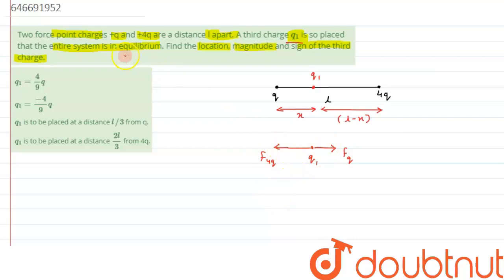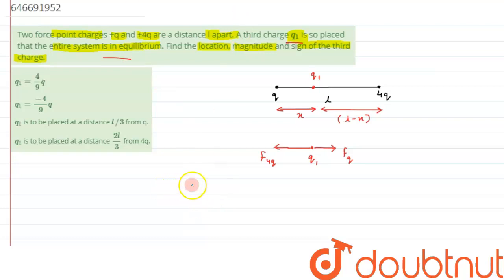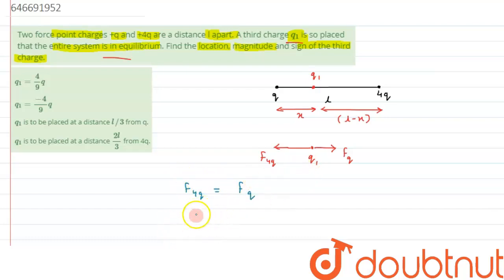For the system to be in equilibrium, these two forces must be equal and opposite in nature. Since the directions are already opposite, we equate their magnitudes.